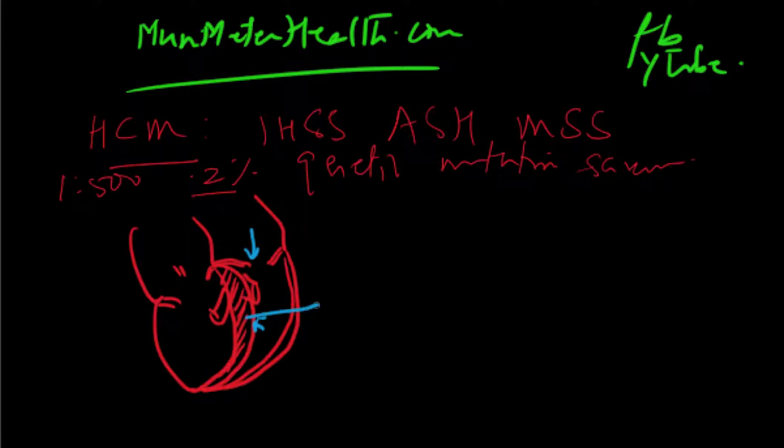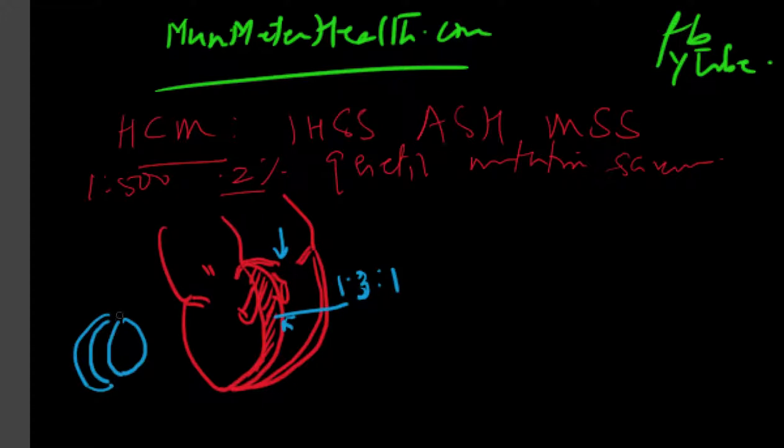The thickness is normally about 1.3 to 1 ratio between the septal wall and the free wall, which is the lateral wall. If you look at the left ventricle cross-section, the right ventricle looks like a D shape, and the left ventricle tends to have septal hypertrophy. It tends to bulge within the left ventricle here.